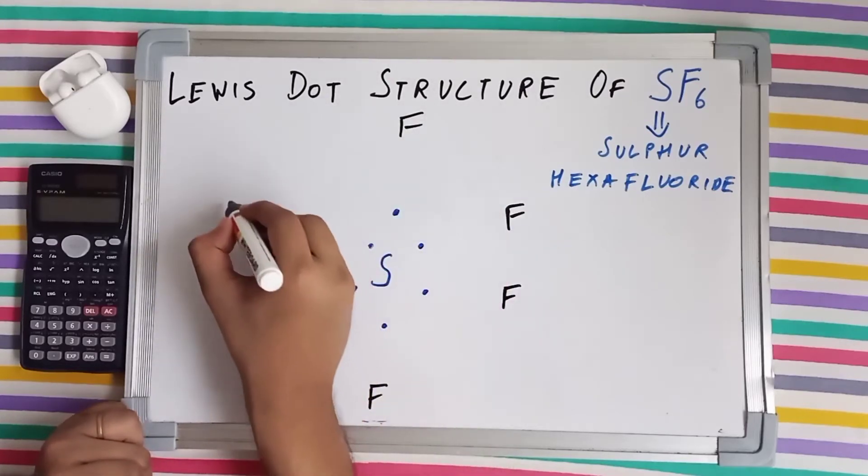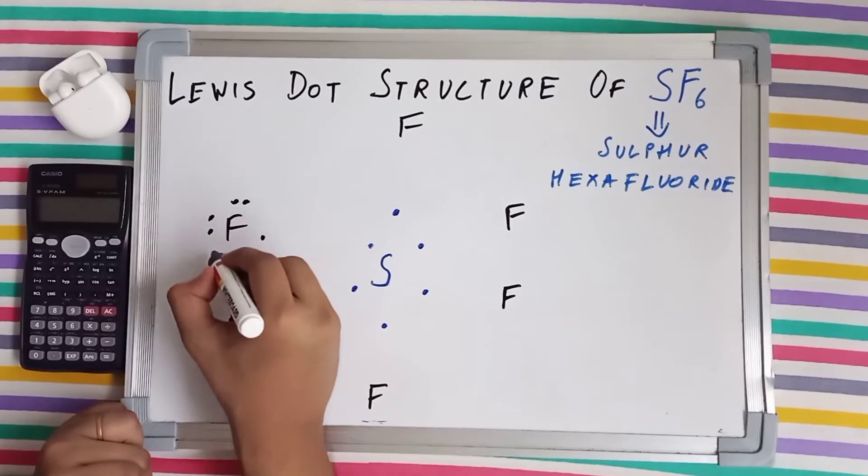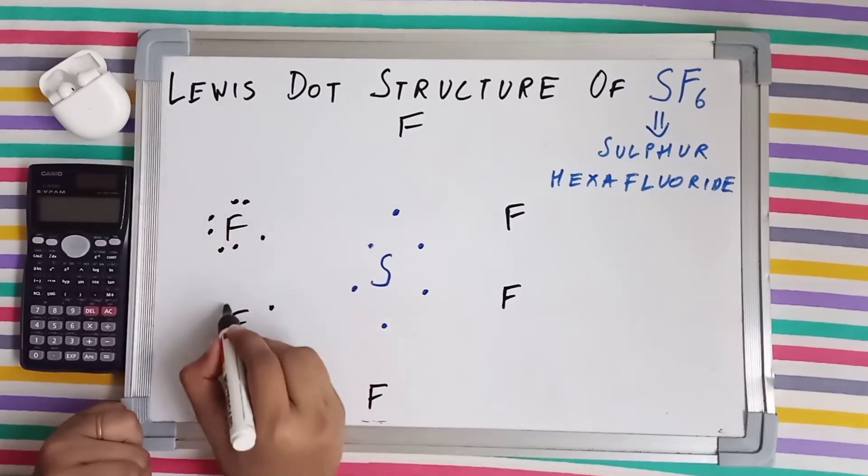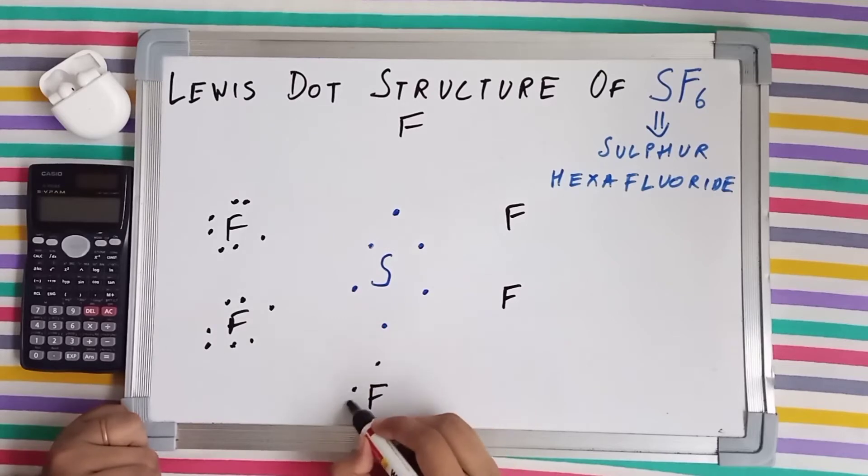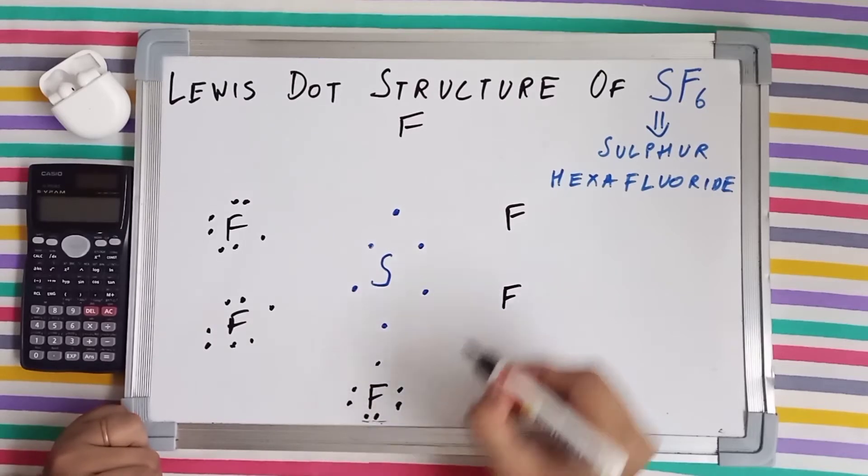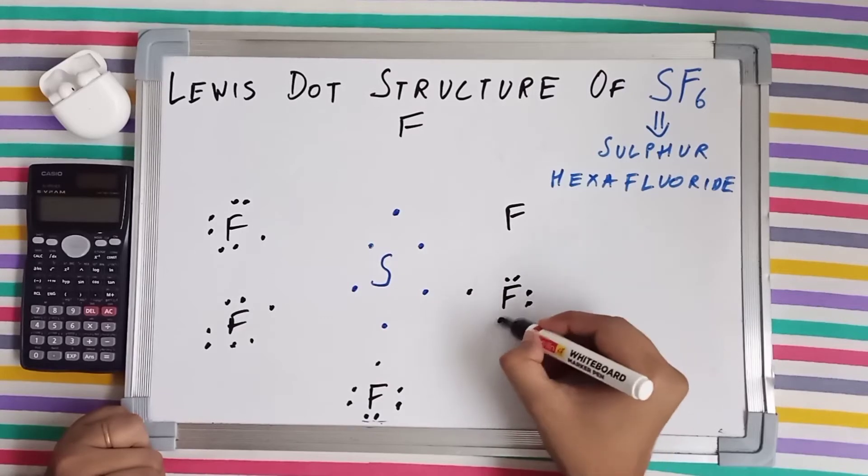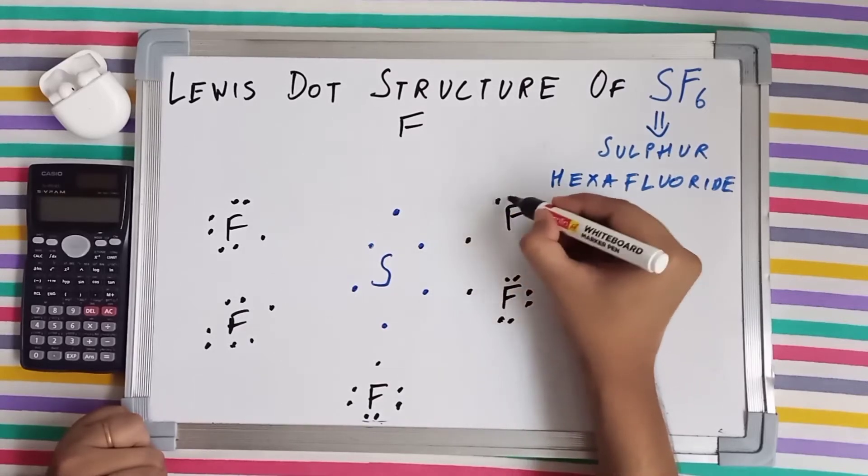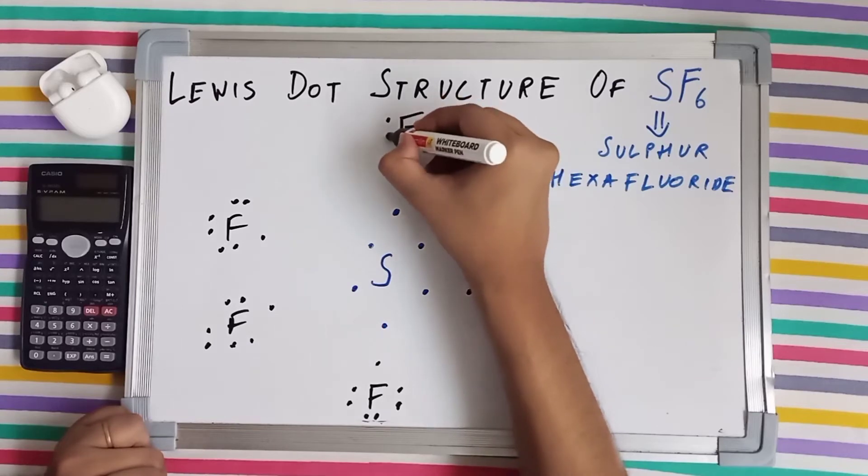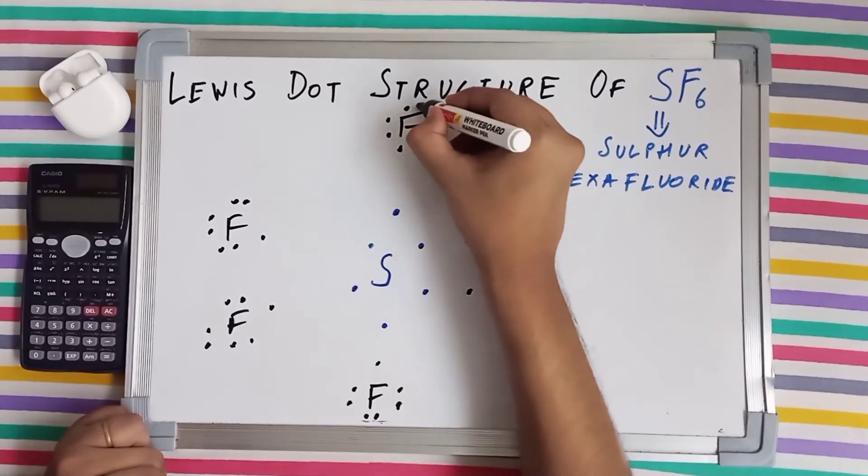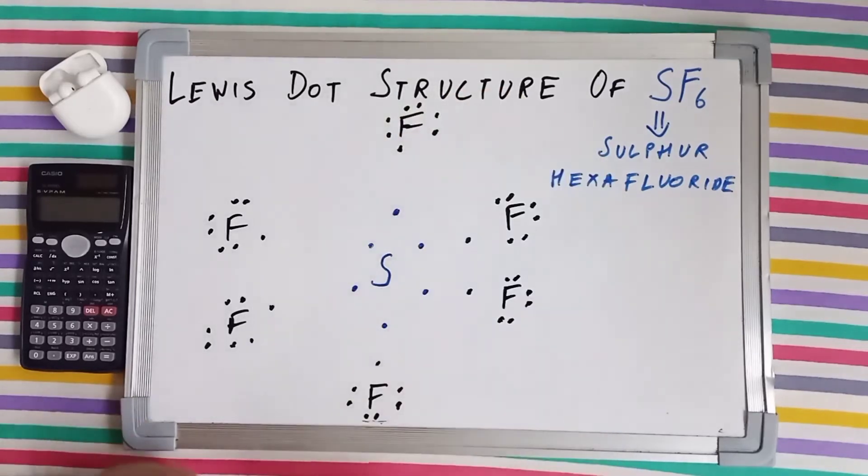They all are having seven valence electrons. I'll draw all seven electrons on each fluorine atom.